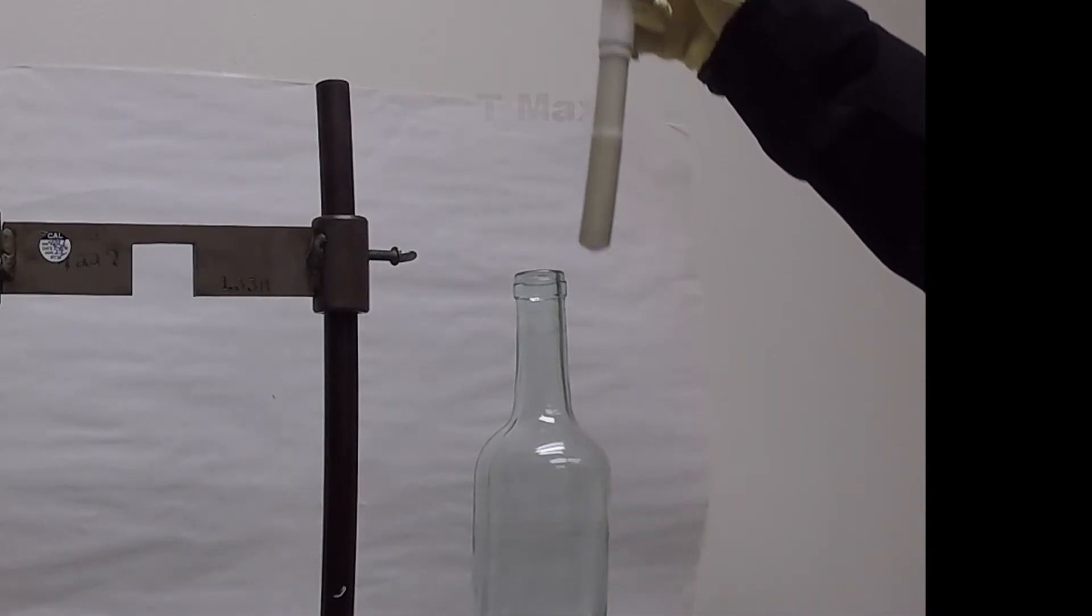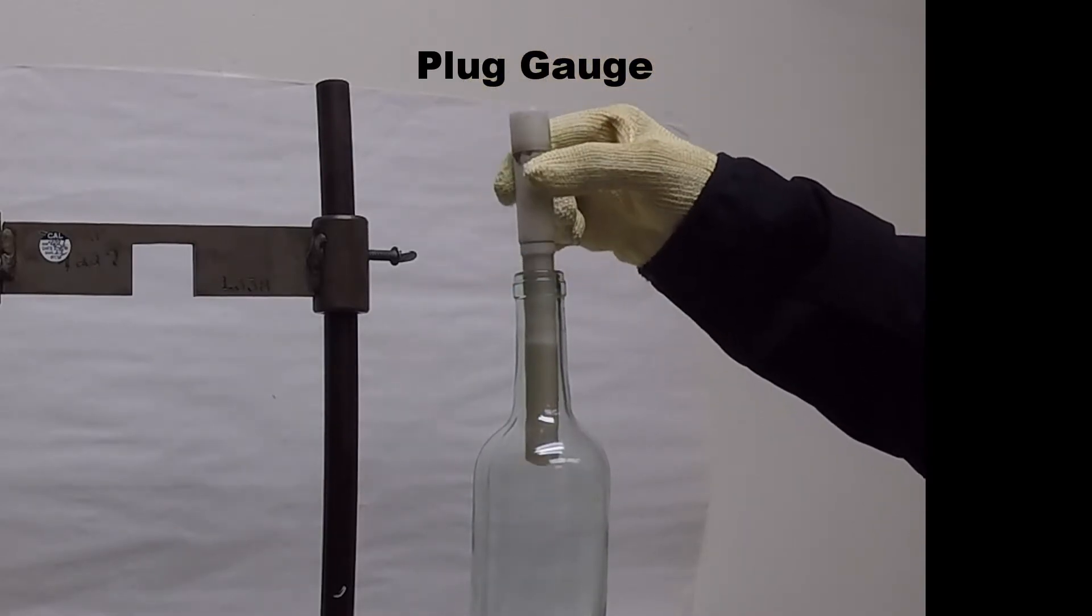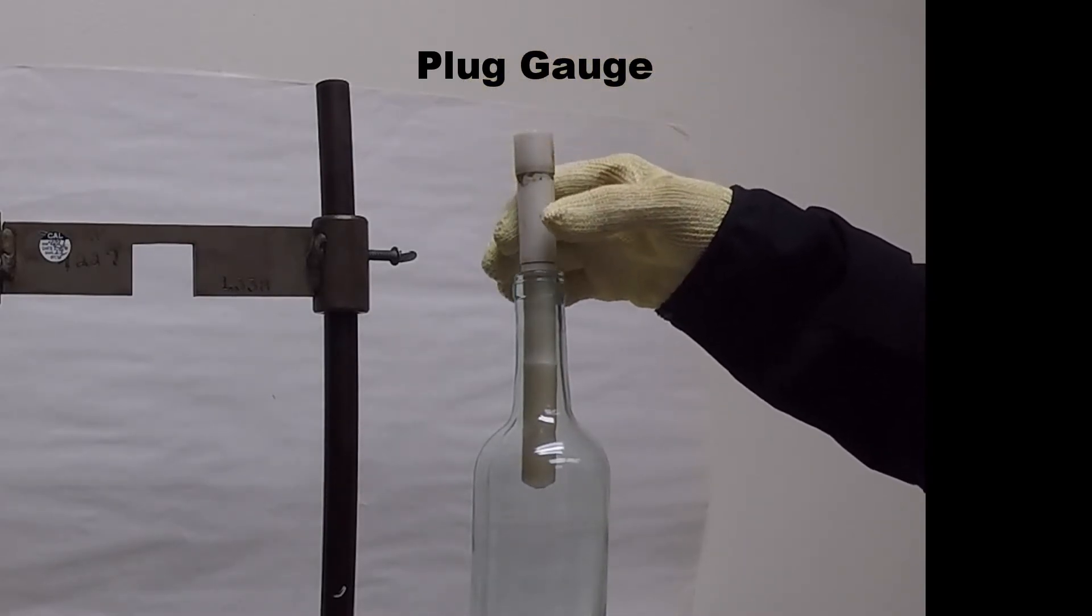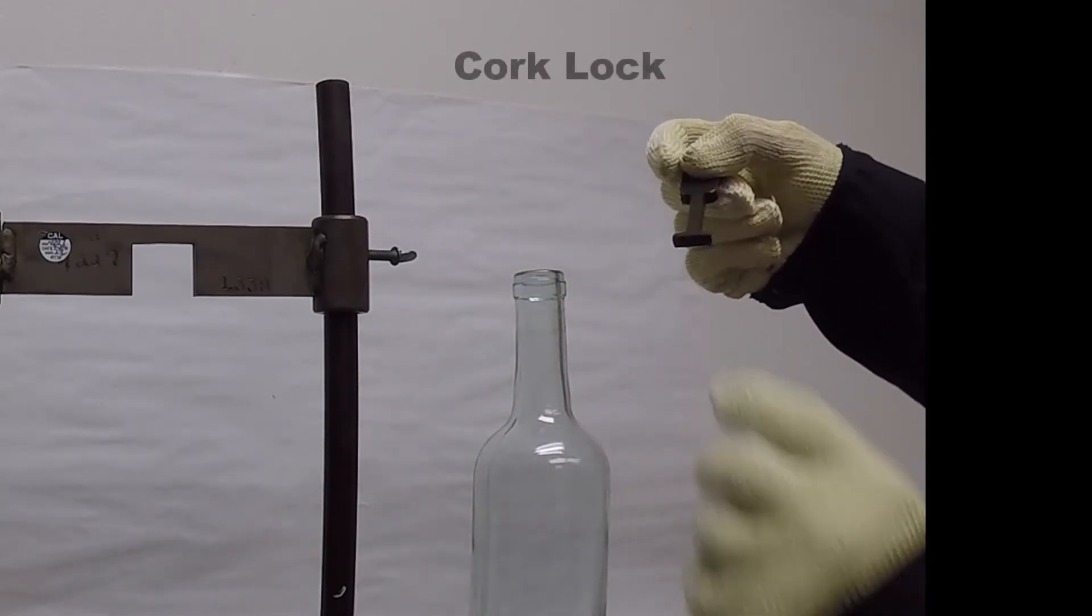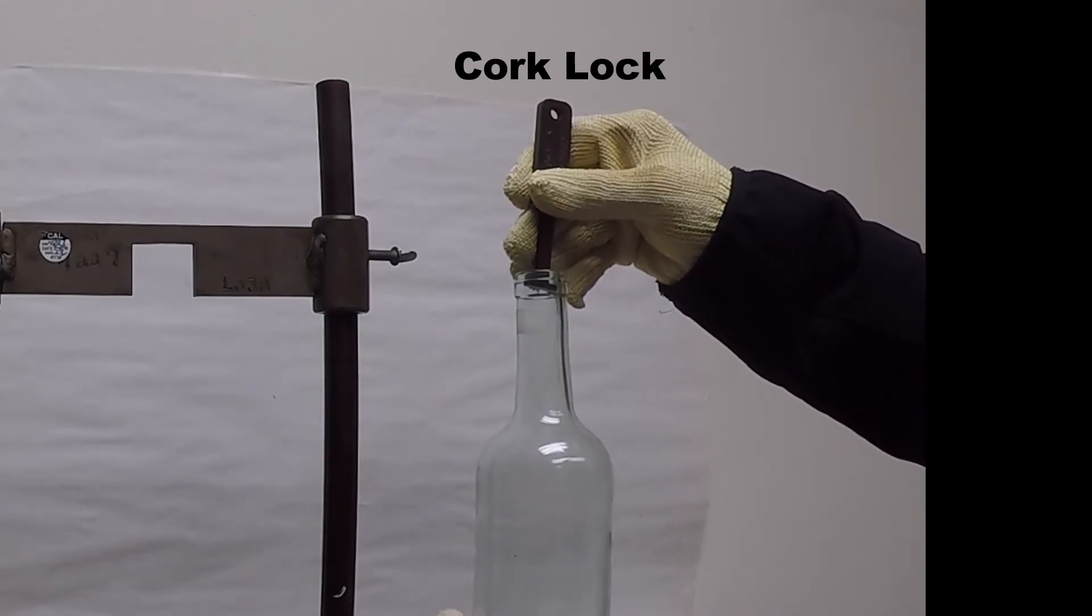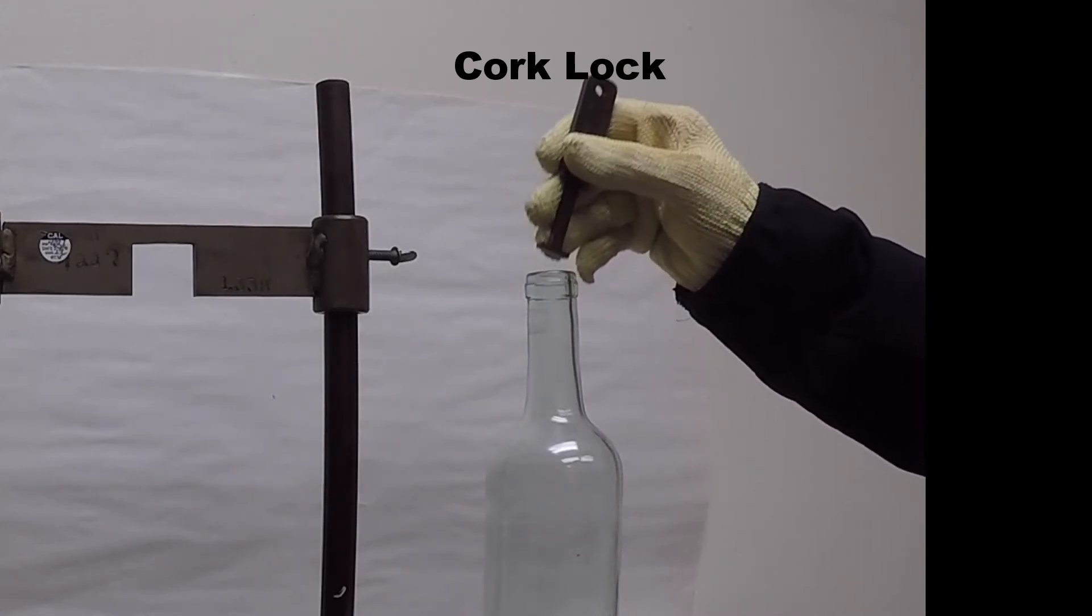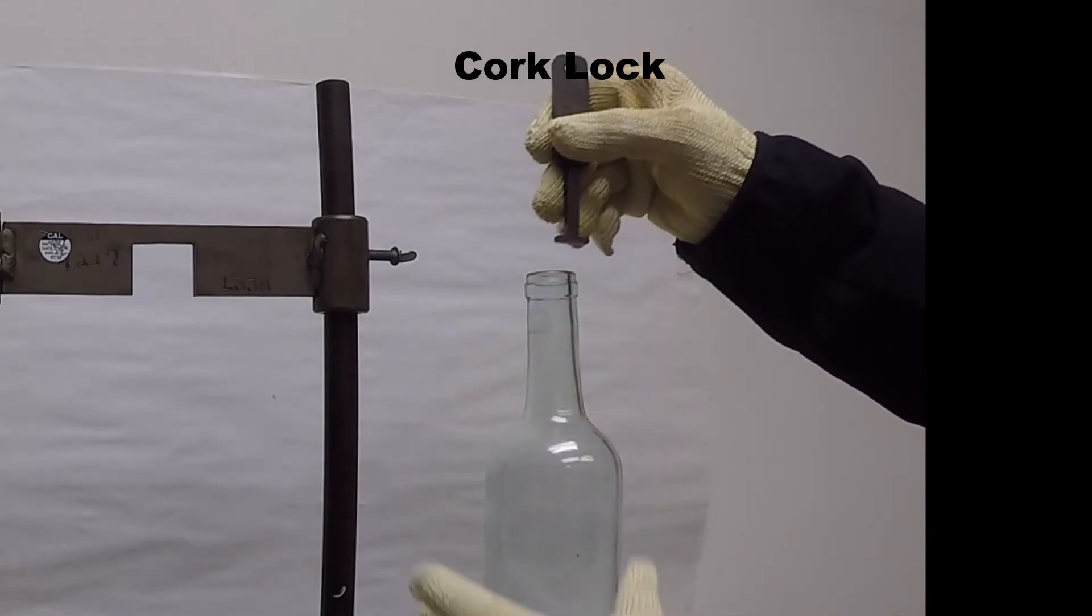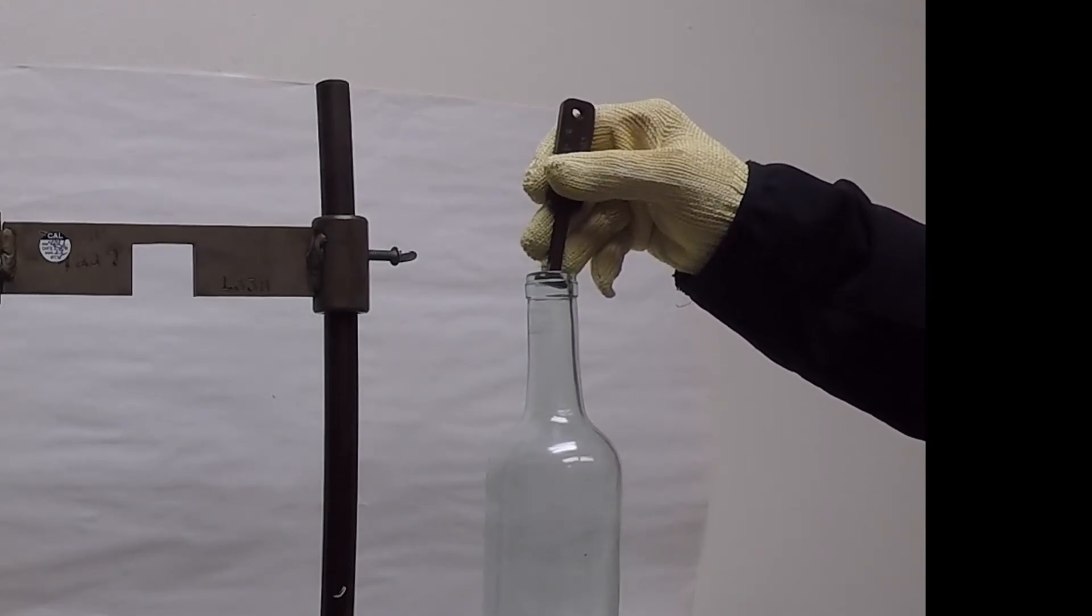Cork lock gauge, 710 should go in, 750 at the top cutout should not. Cork lock gauge, this gauge is put inside the finish. The bottle is rotated. The gauge can stand up straight, but if it stands up straight, the line indicated on the cork lock gauge should not come above the top of the sealing surface.